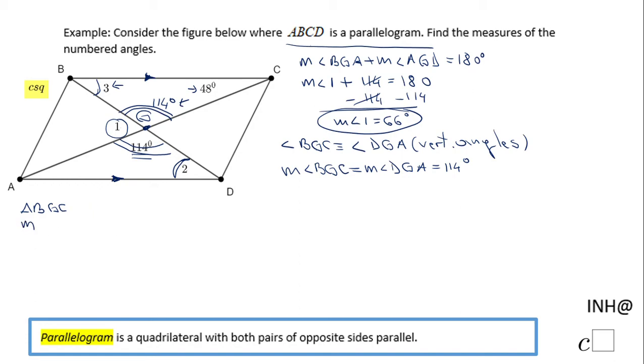We have 114, we have 48, and we can find angle 3 because the sum of the interior angles is 180. My next statement: the measure of angle CBG plus the measure of angle BGC plus the measure of angle GCB equals 180 degrees.